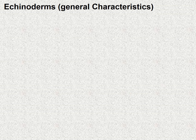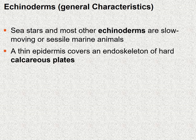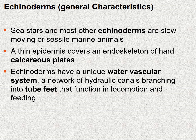Now let's look at some general characteristics of echinoderms. Some of these do not apply to all groups, but as a whole these are general characteristics. One, they are generally very slow moving or even sessile — sea stars are an example. They are marine animals. They also have a thin epidermis that covers an endoskeleton made of hard calcareous plates — essentially calcium carbonate, almost like a shell. They also have a unique water vascular system: a network of hydraulic canals which branch leading to the tube feet, which function primarily in locomotion and sometimes feeding.